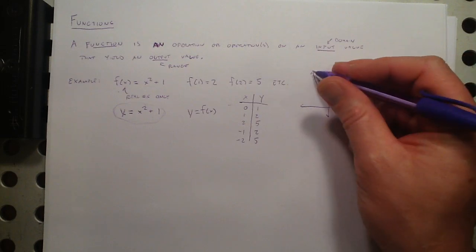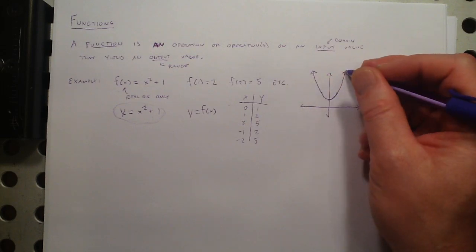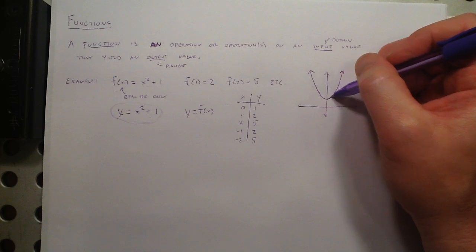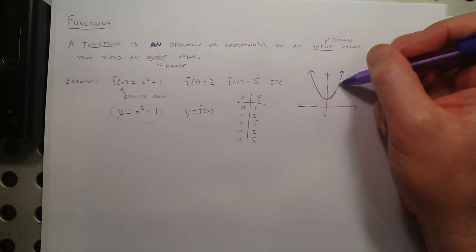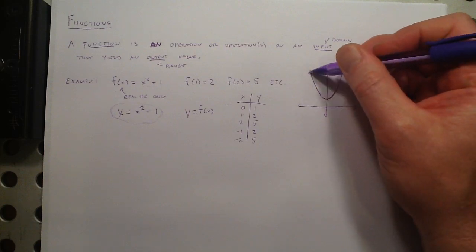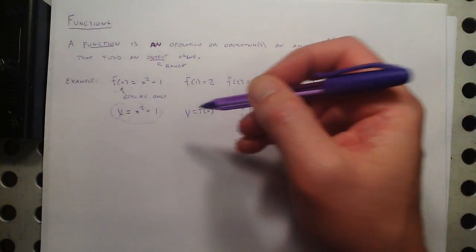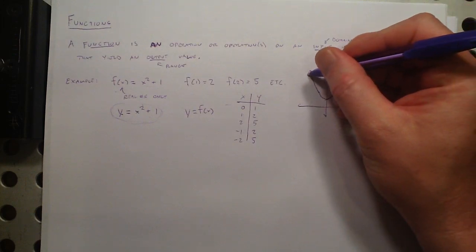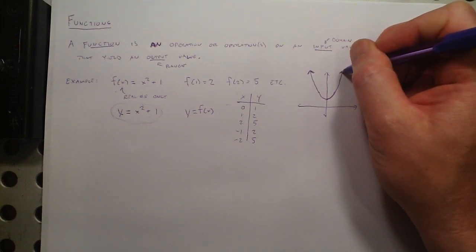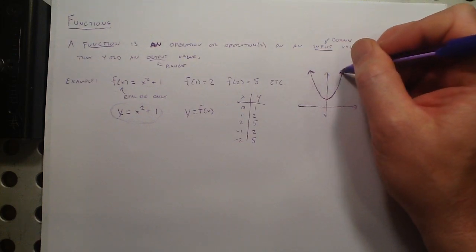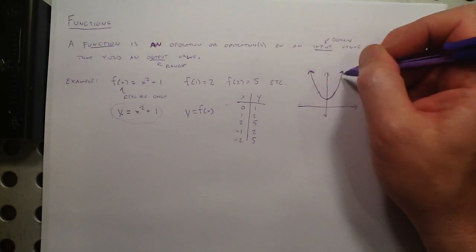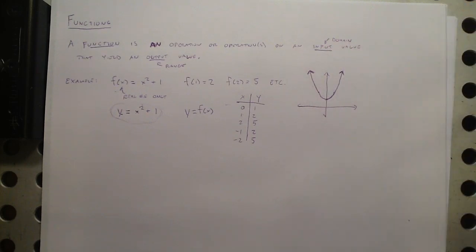When we draw this graph, we're doing a very powerful thing: we're making a visual representation of all the different x, y pairs that make this equation true. By drawing a continuous curve rather than just a series of dots, we're capturing the idea that there are infinitely many of them. Our little arrows on the end indicate that what's pictured here is not all of it — it keeps going off in both directions.